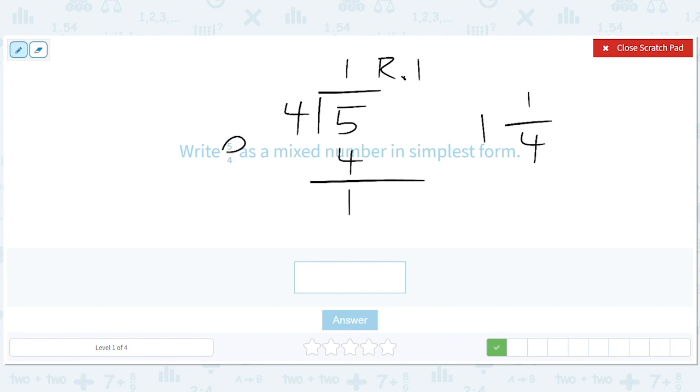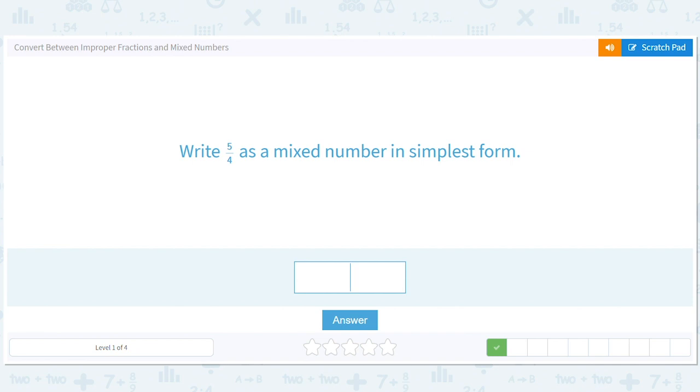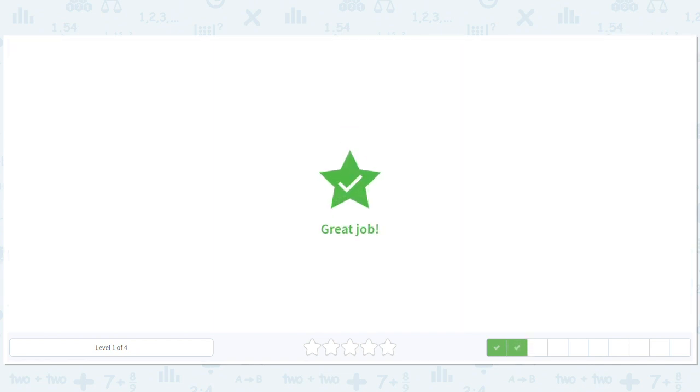It's just 1, 4 fourths would be 1, right? So, 5 fourths is just 1 extra fourth. 1 and 1 forward slash 4. That's how you put it in the math games.